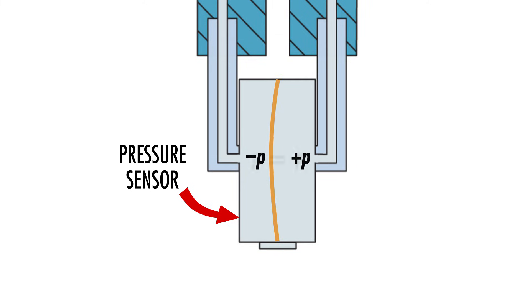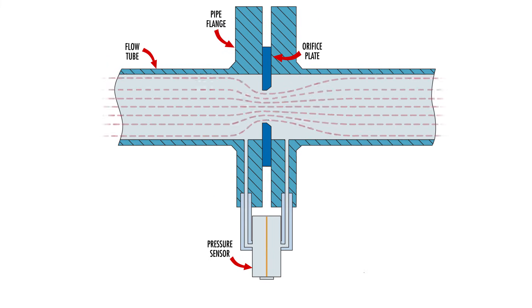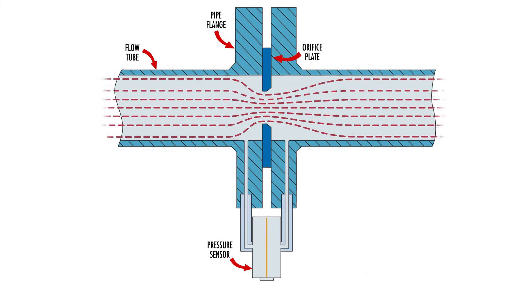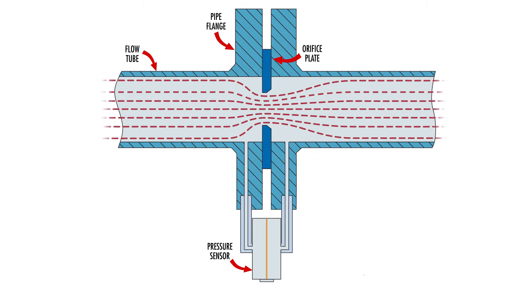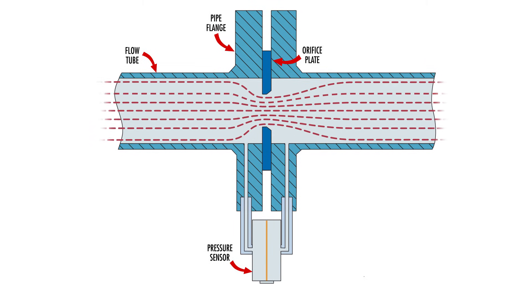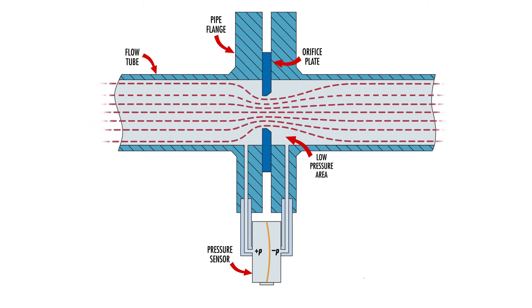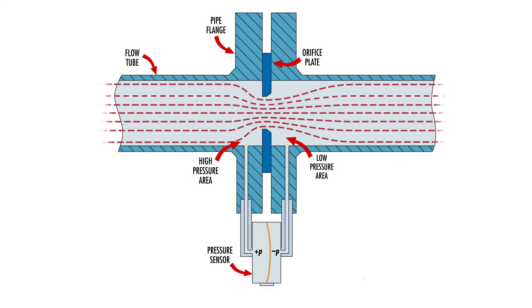When there is no flow, the pressure before and after the restriction is the same. Here's where Bernoulli's Principle comes into play. When the fluid begins to flow, the velocity near the restriction increases significantly due to the decreased cross-section at the orifice plate, causing the static pressure on the downstream side of the pressure sensor to decrease, while the upstream pressure increases.